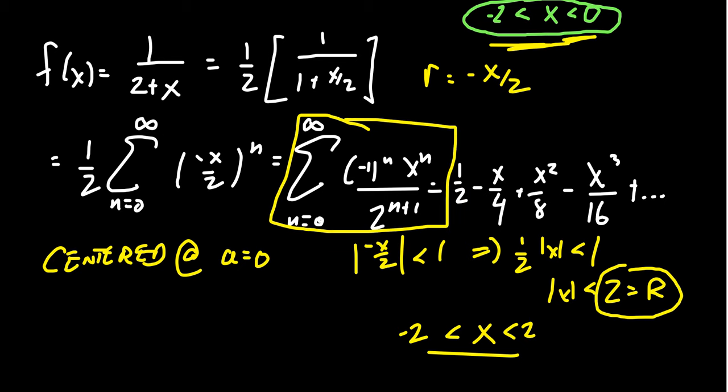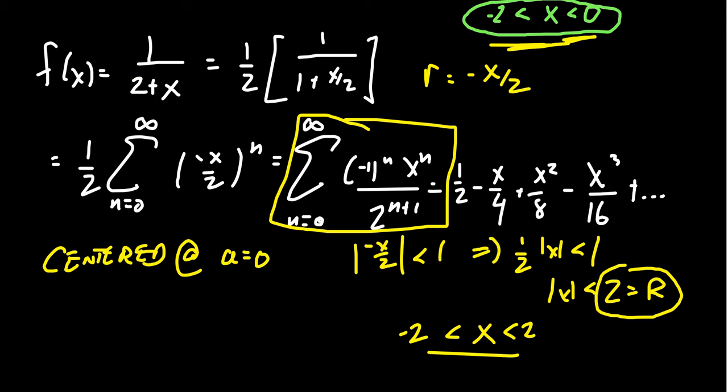This maximal interval of convergence is accomplished by factoring out whatever coefficient appears in front of the constant term so that we have a 1 there. Factor out that coefficient and it gives us a nice big interval of convergence.